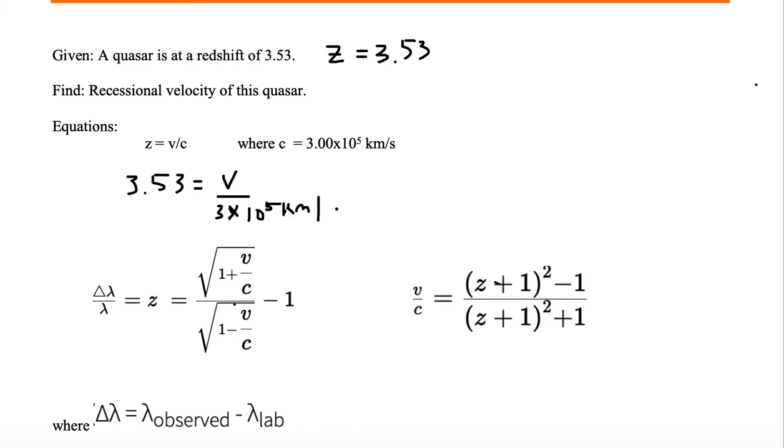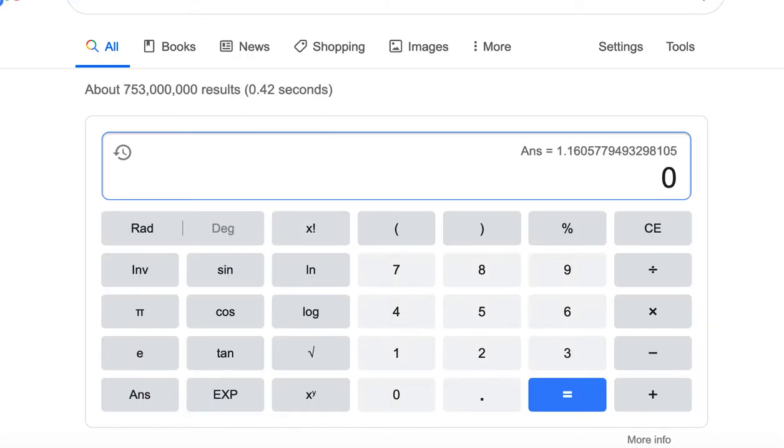We're using 3 times 10 to the fifth kilometers per second as our speed of light. So what we need to do is multiply both sides of the equation by 3 times 10 to the fifth. That will eliminate the letters and numbers on the right-hand side and put all of what we want on one side of the equation. We are left with v, which is equal to 3.53 times 3 times 10 to the fifth.